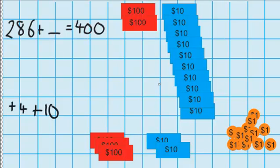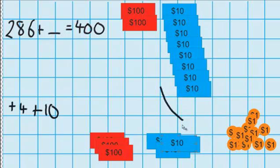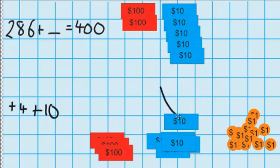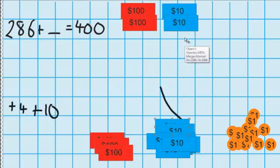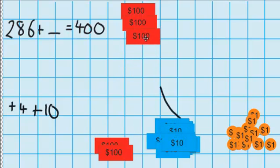Now I've got a new problem. I've now got 10 $10 notes and I know that is the same as one $100 note. So I'm going to have to swap all of these $10 notes, put them into my bank account and swap them for one $100 note. Just like last time, this is a straight swap — I'm not getting any more or ending up with any less.